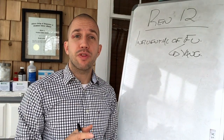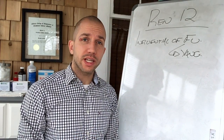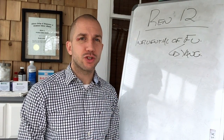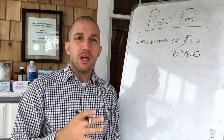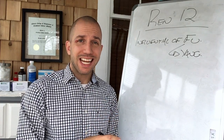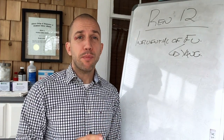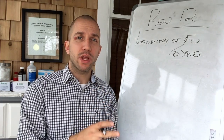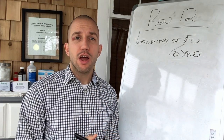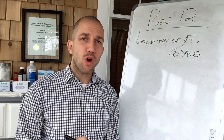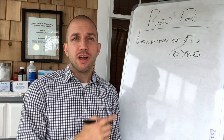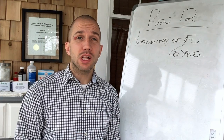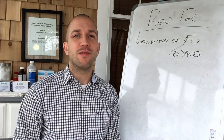If you're working with any Fu organs, you can use REN-12 to augment your treatment. LIVER-13 was a very powerful acupuncture point, not only because it's influential of Zang, but because it was the front mu of the spleen. REN-12 is the front mu collecting point of the stomach.